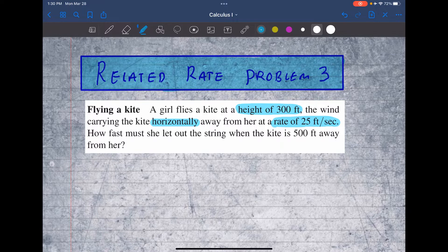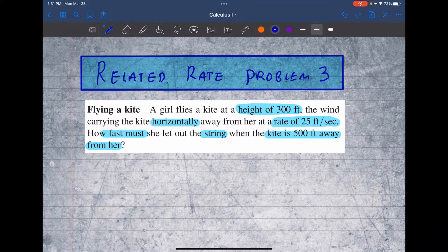We want to know how fast she must let out the string. So how fast, that's a rate, when the kite is 500 feet away from her. So I'm going to go ahead and draw a picture.